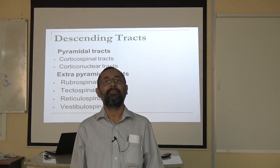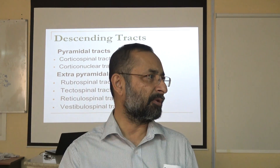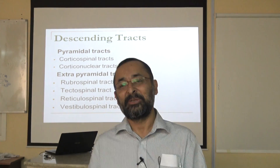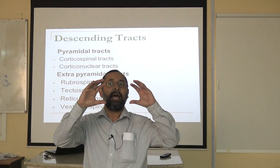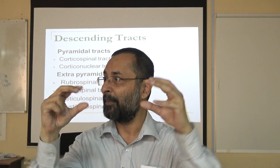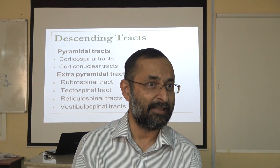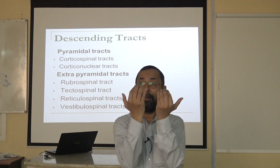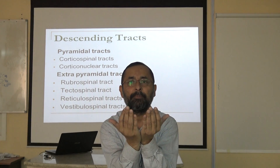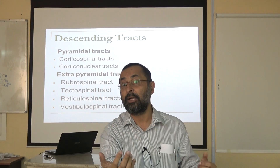The medulla — specifically the anterior surface and upper part — has the pyramids. The pyramids are the swollen parts on the upper anterior medulla; on the sides of the pyramids you have the olives. The medial upper part of the medulla bulges forward in a typical triangular — inverted triangle — shape, and that is why we call it a pyramid.